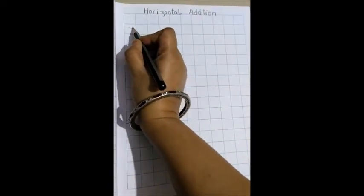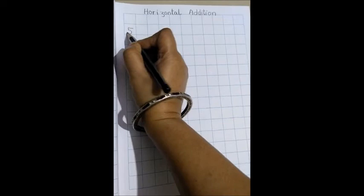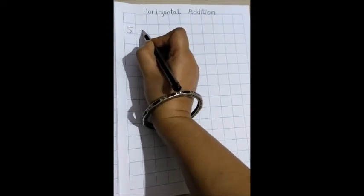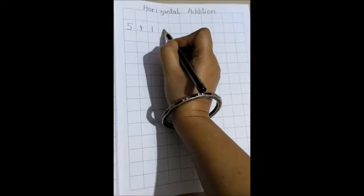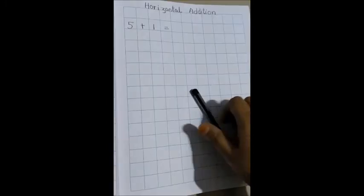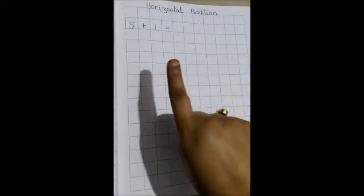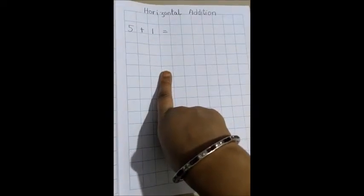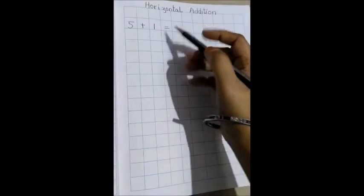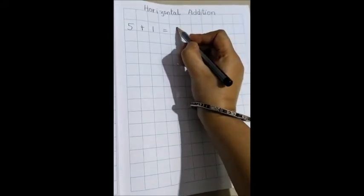Now supposing if I give the number 5 plus 1 equals. We know which is the bigger number, 5 or 1? 5. So we have 5 in our mind and how many fingers out? One finger out. So after 5 what will come? 6. So we will write out here the answer will be 6.